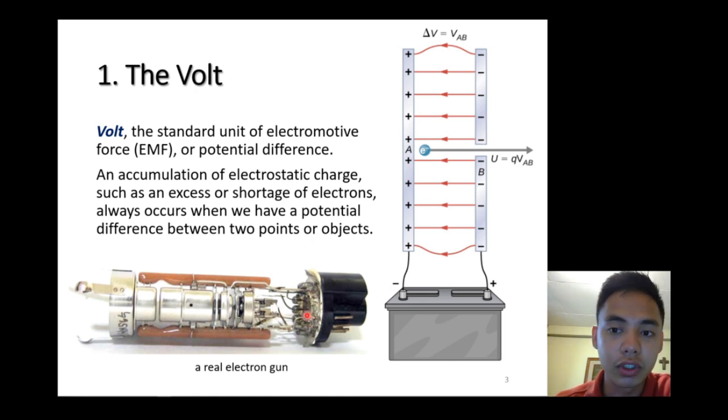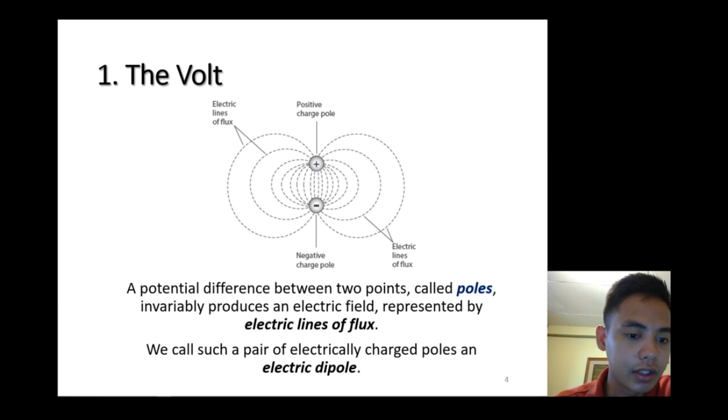A potential difference between two points, called poles, produces an electric field represented by electric lines of flux. These are just representations and do not conform to reality, but they represent to us the magnitude or intensity of the flux or electric field.